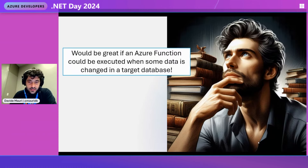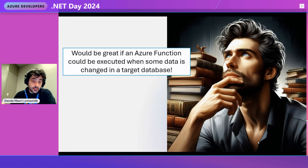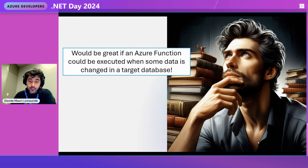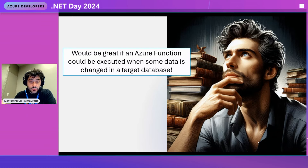It would be fantastic if an Azure Function could be executed when some data is changed in the target database, because that would enable the database itself to become an event producer. This means you don't have to poll for data in the database — you just react to changes, which is exactly the whole idea behind event-driven programming. You can react as fast as possible to changes and then do something, like make an order, ship an order, or enable some feature in a website.